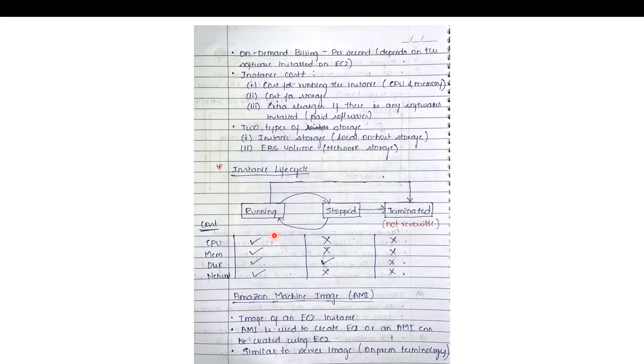Regarding cost and lifecycle state: when the instance is in running state, you pay for CPU, memory, disk, and network. When the EC2 instance is in stopped state, you still pay for the disk but not for CPU, memory, or networking. When you terminate the EC2 instance, you do not pay for any of these — not a single penny. This is how the EC2 instance lifecycle and billing work.